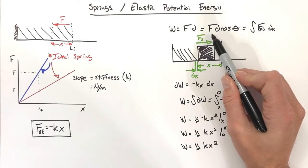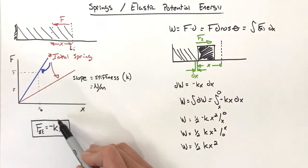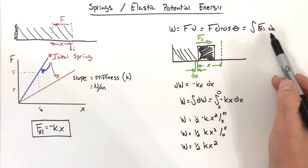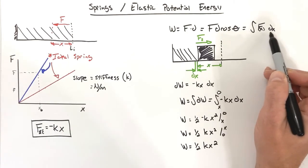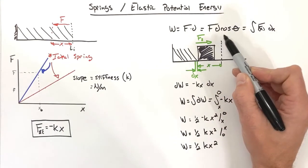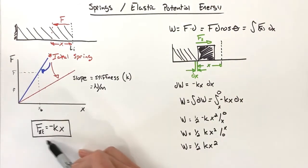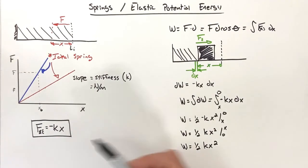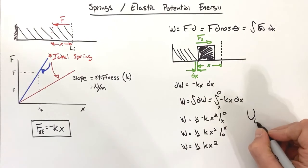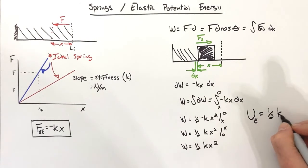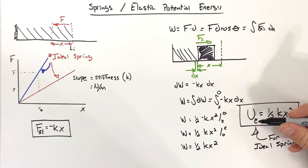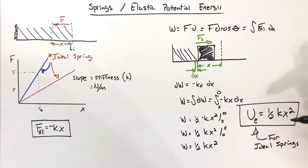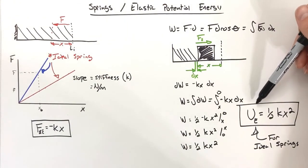This formula is the slightly more complicated version of work that applies when force is a function of position. It's written formally as elastic potential energy: the energy stored in a spring equals ½kx². This only ever applies to ideal springs. Whether you call it elastic potential energy or spring potential energy doesn't matter — what matters is the equation.